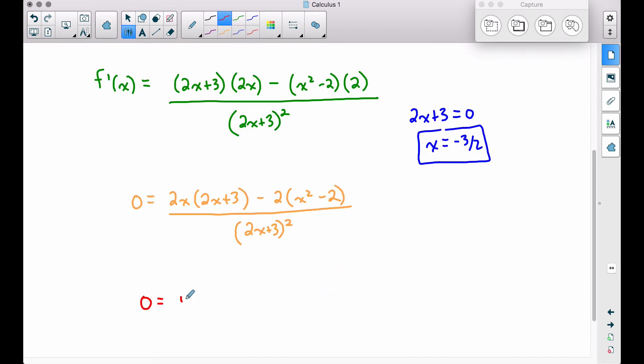So we have zero equals 4x squared plus 6x, I'm distributing this to these two terms here. Now watch your signs here, we have minus 2x squared plus 4, distributing that negative 2 to the x squared and to that negative 2 there as well. And then this is all over 2x plus 3 all squared.